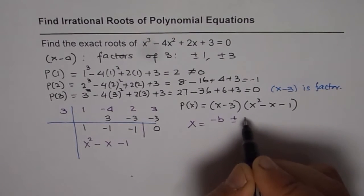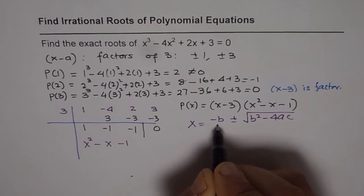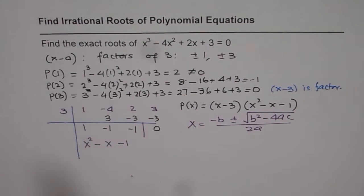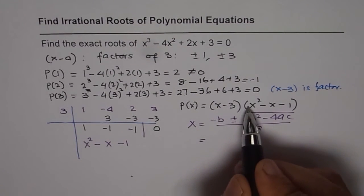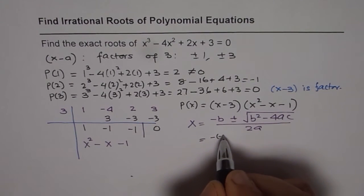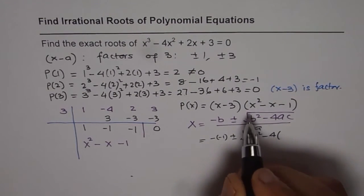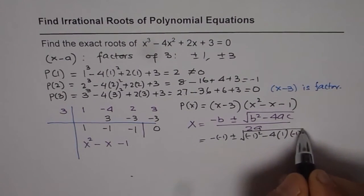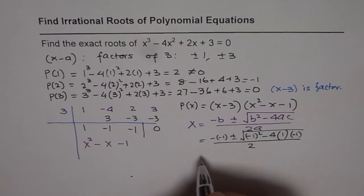Let us use the quadratic formula to find the answer. The formula is x = (-b ± √(b² - 4ac)) / 2a. Remember, we are looking for irrational roots and exact answers. Now a is 1, b is -1, c is -1. So -(-1) ± √((-1)² - 4(1)(-1)) divided by 2(1).